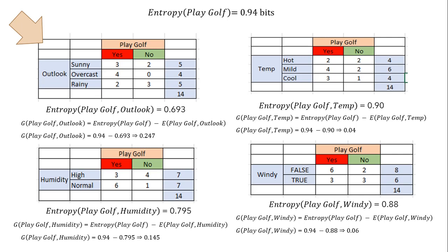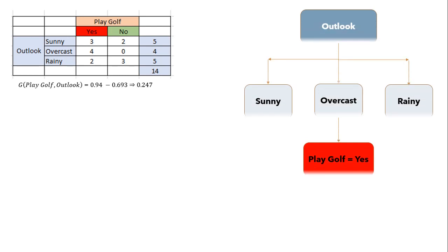We divide the dataset by its branches and repeat the same process on every branch. A branch with entropy of 0 is always a leaf node, but a branch with entropy greater than 0 needs further splitting. Overcast has 4 yes and 0 no, so we create a leaf node at overcast with the value 'play golf = yes'. We now only need to look at sunny and rainy.